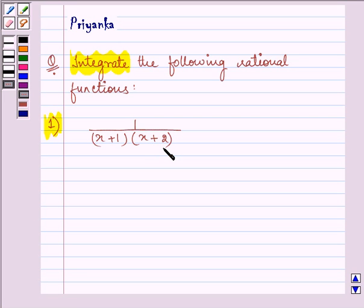Now if you want to evaluate the integral of a function which is a proper rational function, it's always possible to write the integrand as a sum of simpler rational functions by a method called partial fraction decomposition.